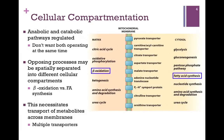We've really considered cellular compartmentation as we've considered various metabolic pathways. Anabolic and catabolic pathways are regulated so that opposing pathways don't operate both at the same time and suffer an energy loss as a result. Opposing processes may be spatially separated into different cellular compartments. A prime example is fatty acid beta-oxidation, which takes place in the mitochondrial matrix, as opposed to fatty acid synthesis, which takes place in the cytosol. That's one way we regulate them and ensure both processes aren't running simultaneously.